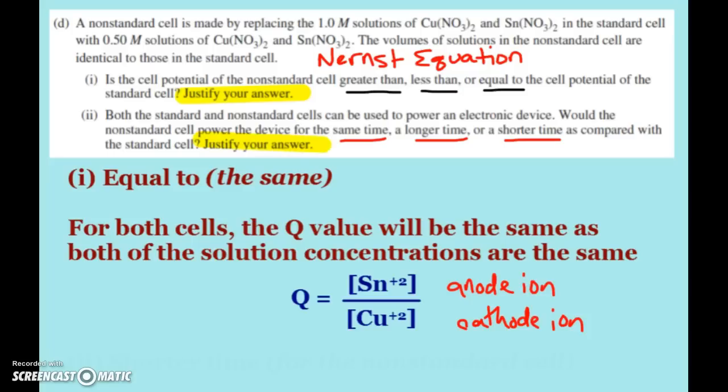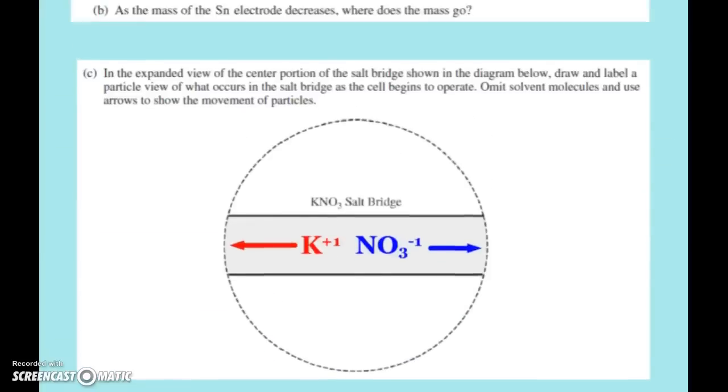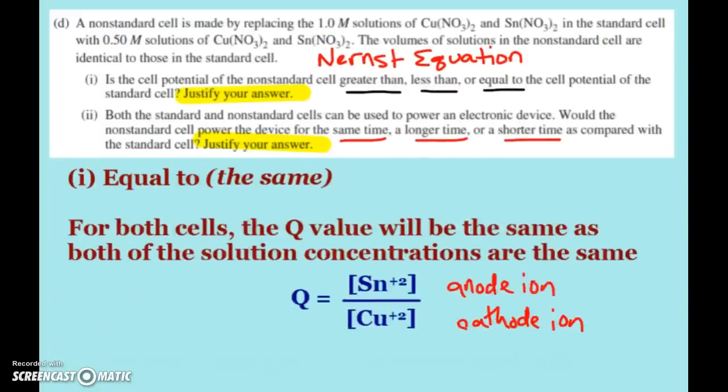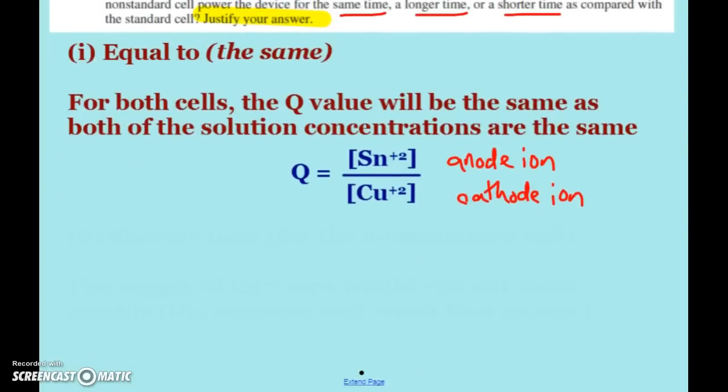The more concentrated the solutions, the longer the cell will run. Less concentrated, it won't last as long. Because what's driving this cell, once you click it together, the copper ions are plating over here, whereas over here we're adding more ions into the solution. So once there's no more copper ions to plate out, cell's all done.